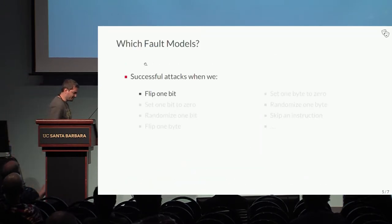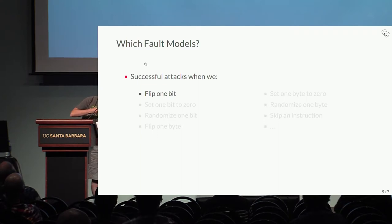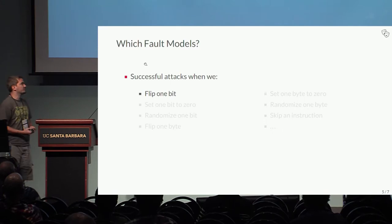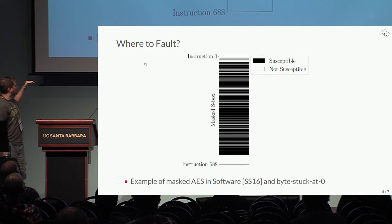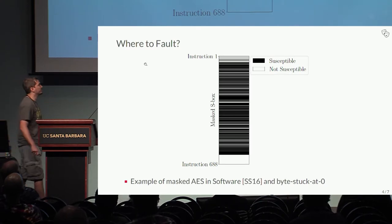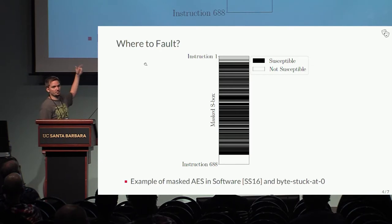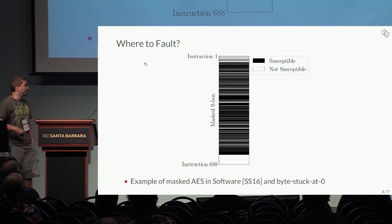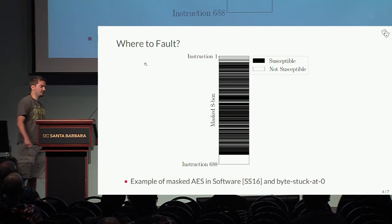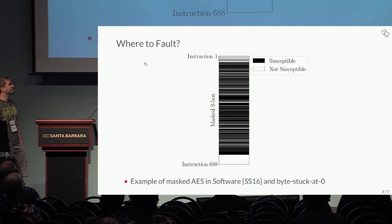What you might care about is the question: how hard is it to find a useful location to fault in your implementation? Here you see an example of a masked AES implementation in software. Here you see the instructions needed to compute the second-to-last S-box layer, and if you are able to set one byte to zero during execution, you can use any of the black locations to mount a fault attack.